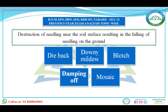Destruction of seedlings near the soil surface resulting in the falling of seedlings on the ground — this is a symptom of which disease: dieback, downy mildew, blotch, damping off, or mosaic? This is the symptom of damping off, caused by a fungus or fungus-like organism that thrives in cooler, wet conditions and is mostly common in younger seedlings. Older plants are rarely killed because secondary stem tissue forms a protective barrier limiting fungal penetration. There is no cure; only preventive measures like seed treatment with pesticides or use of well-drained soils with good air circulation.